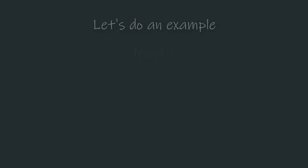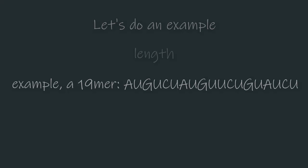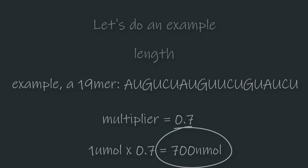First let's talk length. The most common length of oligos are between 6 and 28 bases long. A typical RNA oligo of this length has a multiplier of 0.7. That means if you ordered a 1 micromole synthesis scale, we'd expect a final yield of about 700 nanomoles. The longer the oligo is, the lower the expected yield.